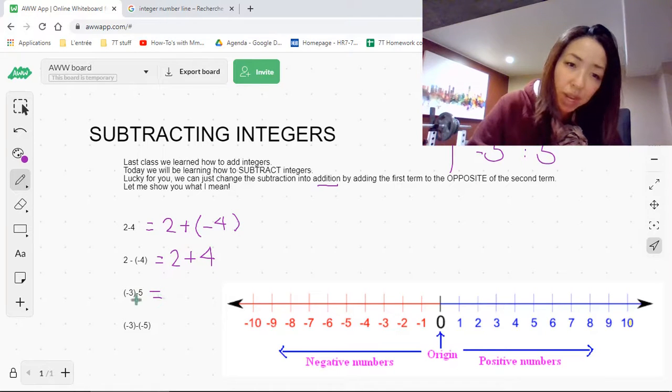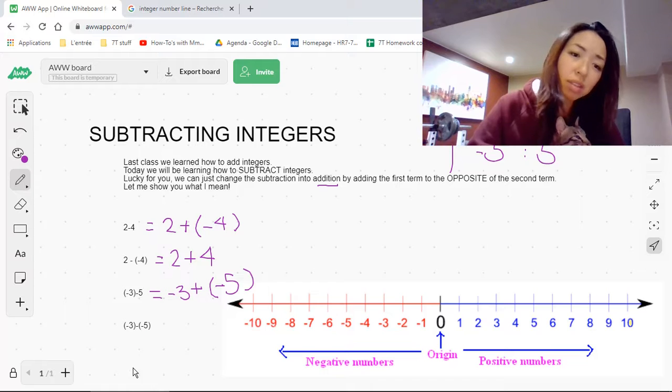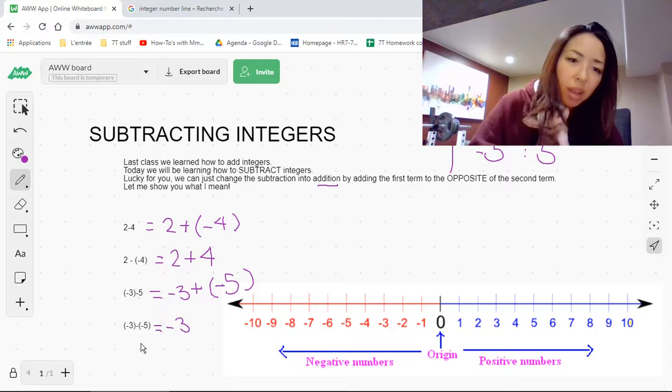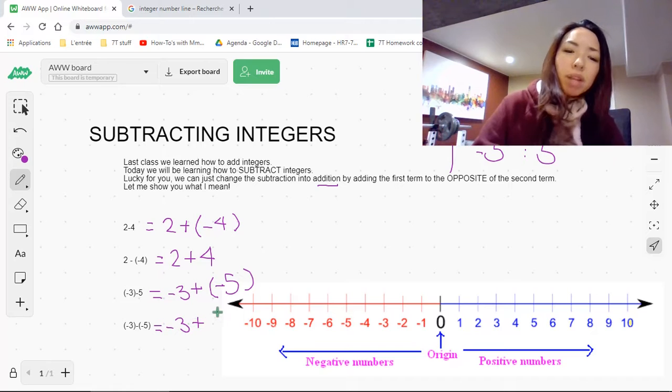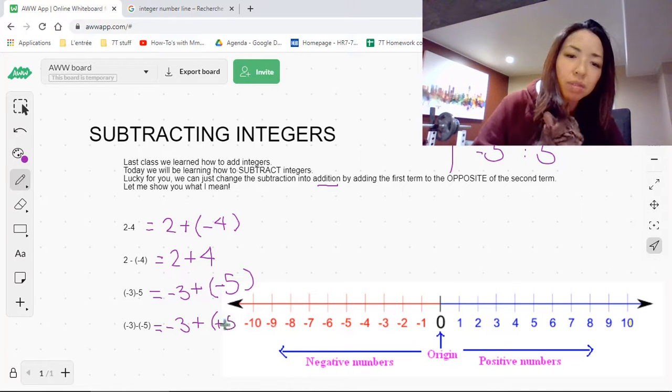For this one, we have negative 3. Don't worry about that. Just keep it there. Change the subtraction into addition by changing the second term to its opposite. So the opposite of 5 is negative 5. So we put negative 3 plus negative 5. And in the final one, don't get scared. There's a lot of minus signs, but that's okay. Just recopy the negative 3. And the opposite of negative 5 is positive 5. So change it to an addition by writing plus positive 5, or you could just write negative 3 plus 5.